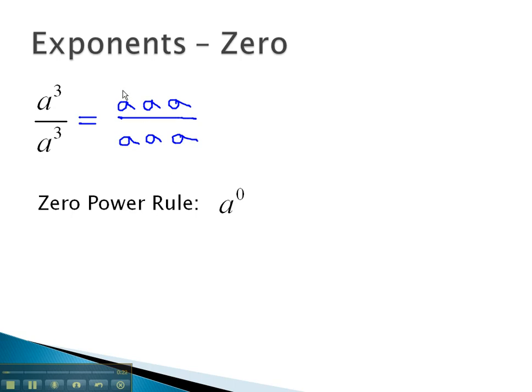Notice as we simplify and divide out the a's, there are no a's left. However, we recall that when everything divides out, there's always a 1 left over in the numerator and denominator. This means our expression simplifies to 1 over 1, or just 1.